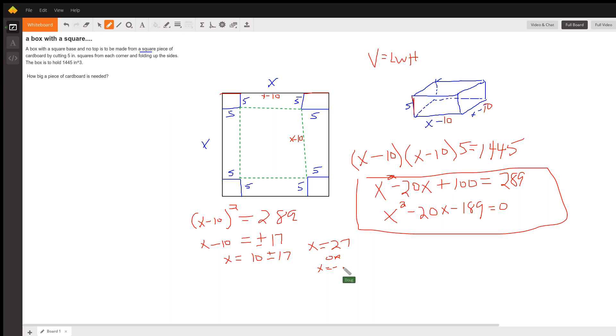In the context of the problem, of course, we reject the X equals negative 7 because you can't have a square with a side of a length of negative 7. So there is what we want the side of the square piece of cardboard to be.